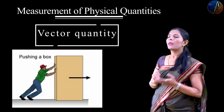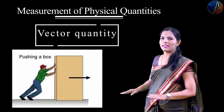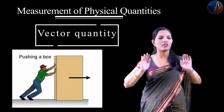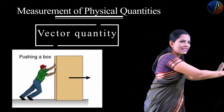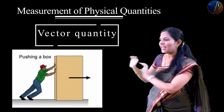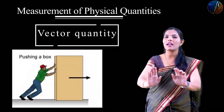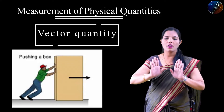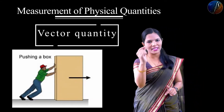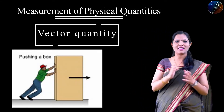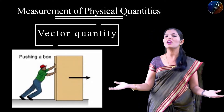The first example is force. You use force, but to move a table you need to apply force in a particular direction — for the left side or the right side. Force has direction. These are tremendous examples of vector quantity.